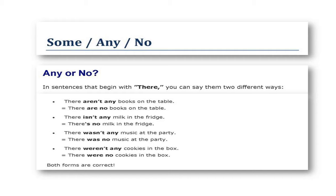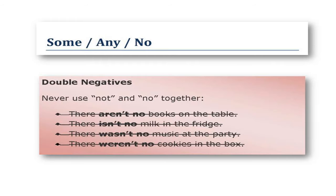Any or no: in sentences that begin with there, you can say them two different ways. There aren't any books on the table, or there are no books on the table. There isn't any milk in the fridge, or there's no milk in the fridge. There wasn't any music at the party, or there was no music at the party. There weren't any cookies in the box, or there were no cookies in the box. Both forms are correct.